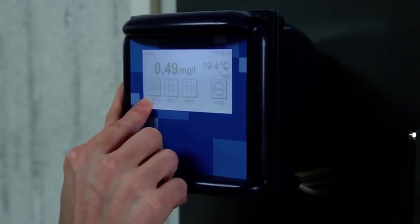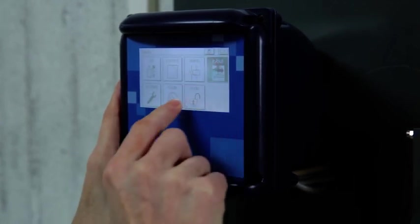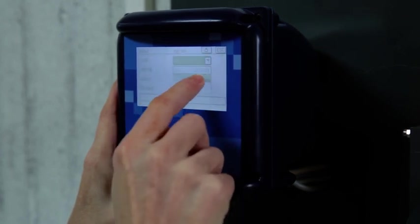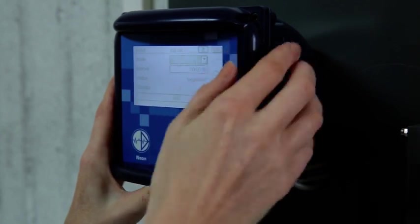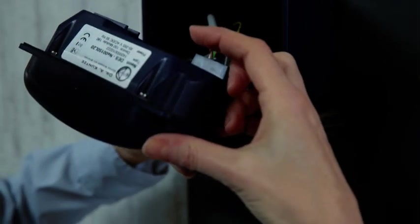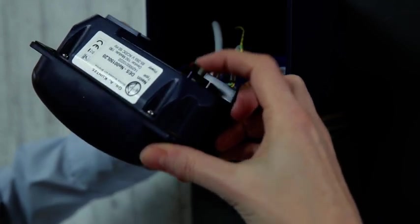To remove the SD card, first switch off the logger and take the instrument out of the housing. The SD card is in the rear in the upper right-hand corner. Push to eject.